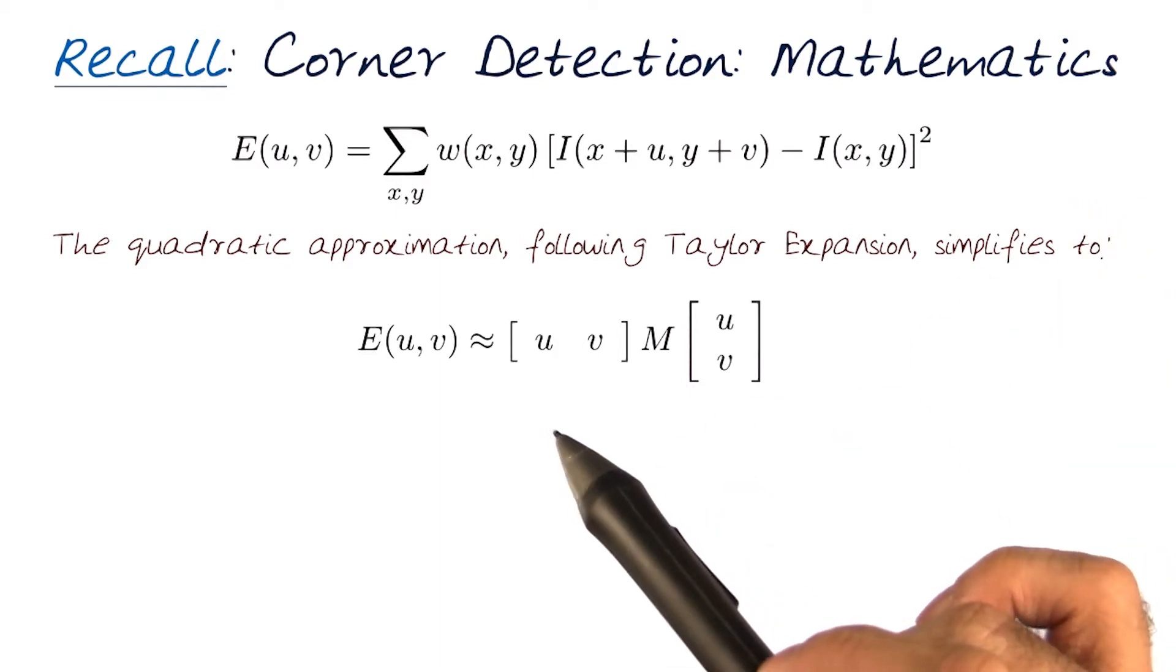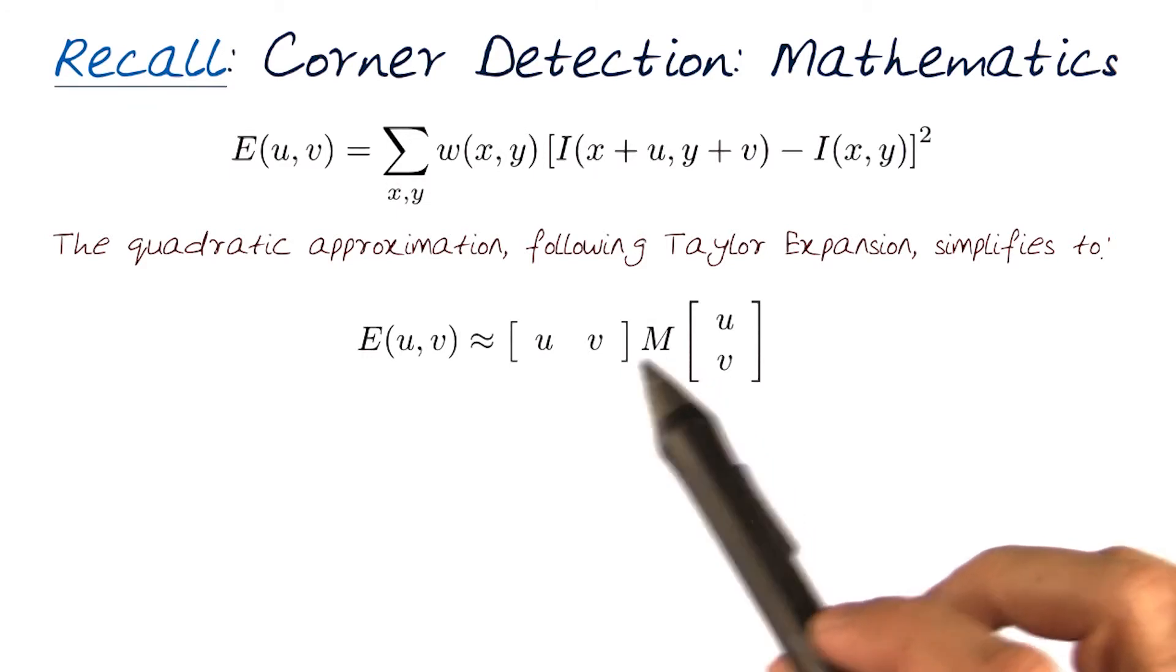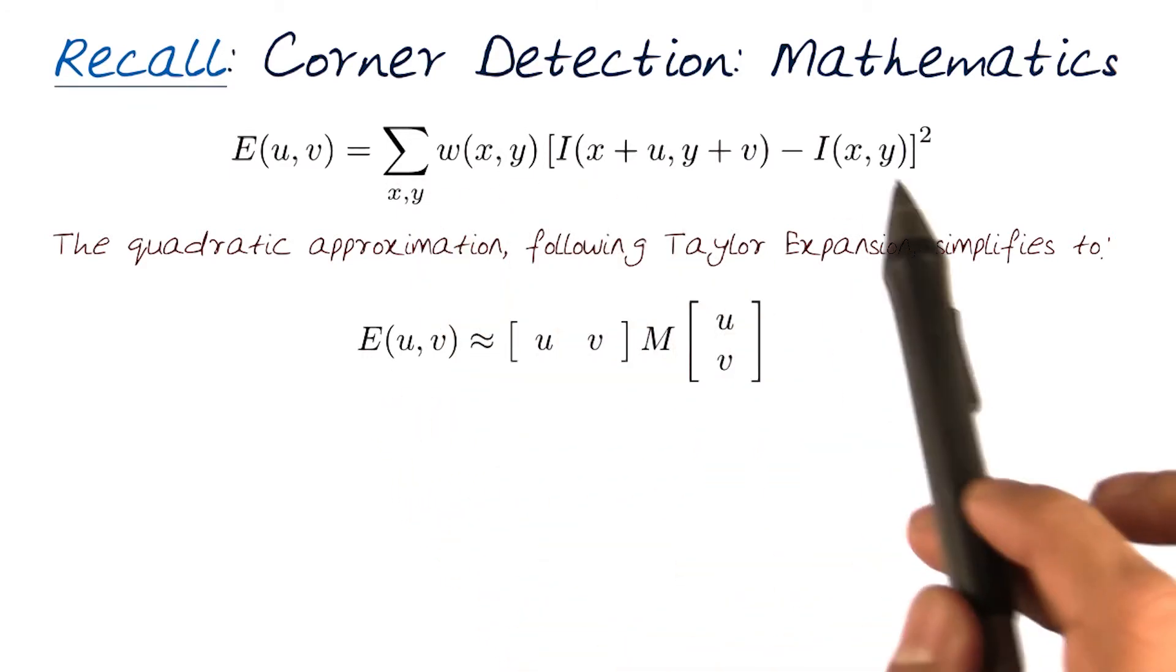It's now in matrix and vector form. M is the matrix we want to compute because that will allow us to do the computation we need.